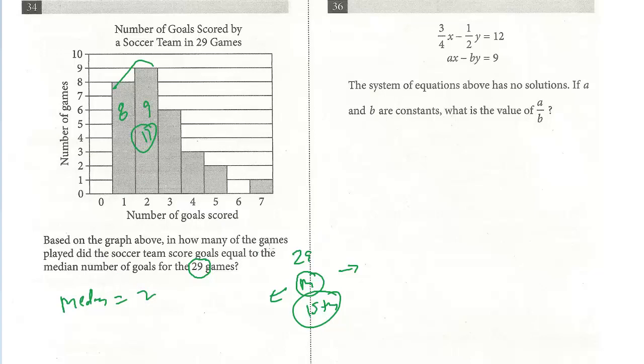The question is asking, in how many of the games played did the soccer team score goals equal to the median number of goals? So we're looking for goals equal to two, same as the median, which is this second bar. And how many of those games did they score two? Nine. And that is the answer. Just pay attention to what the question is asking and read it carefully.